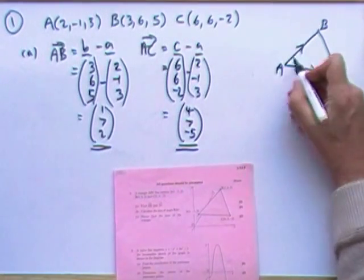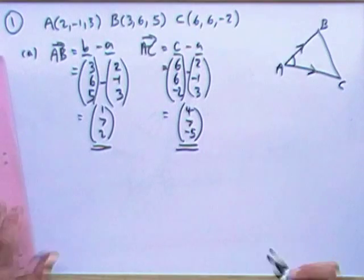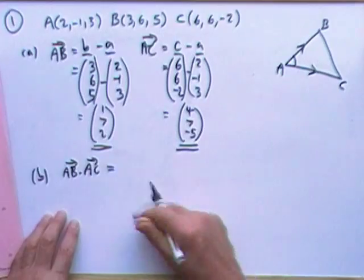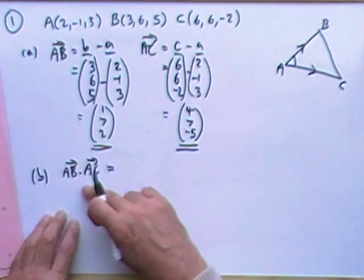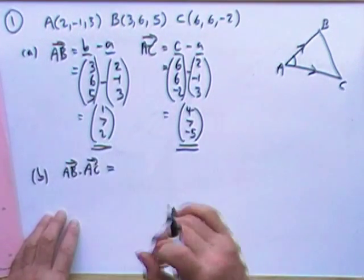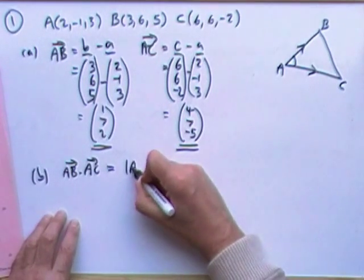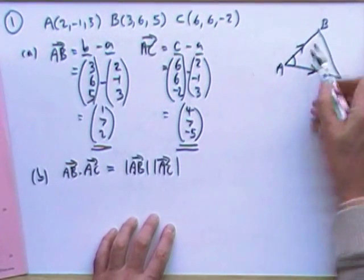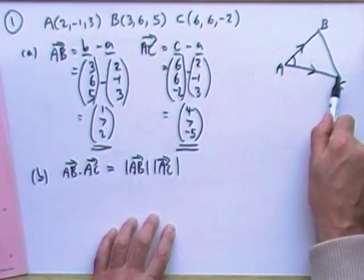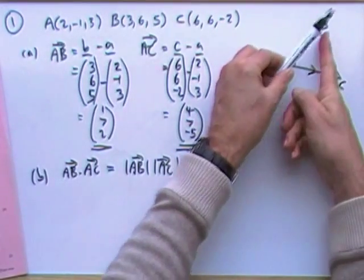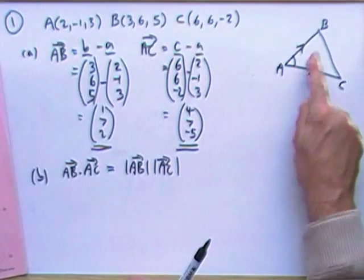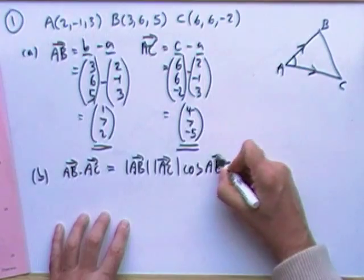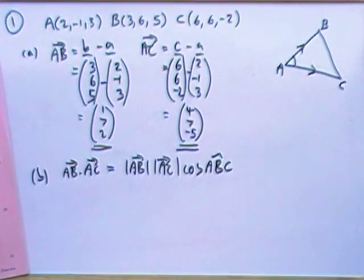And the second bit says, what's the size of this angle? What size is angle BAC? The scalar product of those two vectors, AB dot AC, can either be defined in terms of the product of their components or the product of their lengths. And the length of AB times the length of AC, but only the parts of the lengths that go in the same direction. So it's just the component of AB that works the same way as AC.